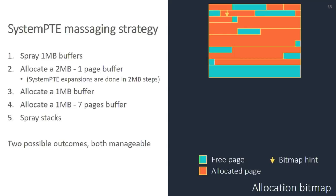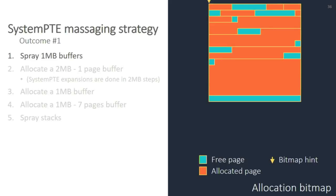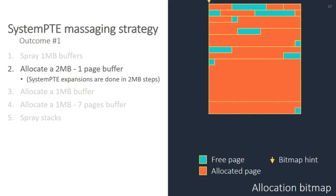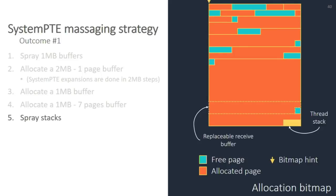At that point, we basically have a heap massaging strategy to place a receive buffer at a known offset from a stack. Normally I would go through this in detail, but I want to spend more time on the mitigation later. All you need to know is I do a bunch of allocations in a very specific order with very specific sizes to match the allocator — placing my receive buffer, then another allocation, another allocation, and then a stack spawns right there — so you end up with a stack at a known offset from the receive buffer.